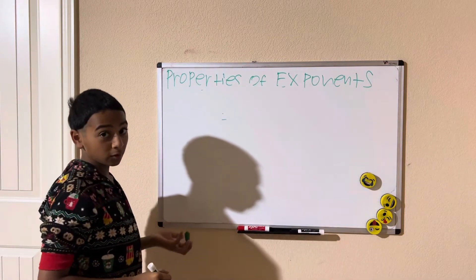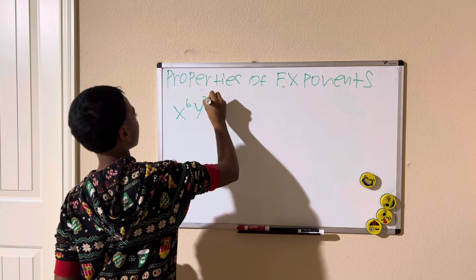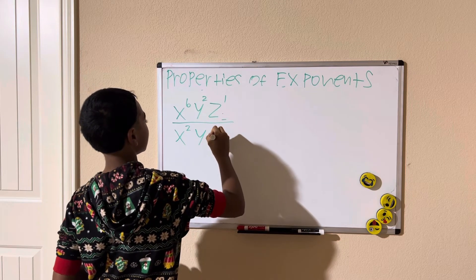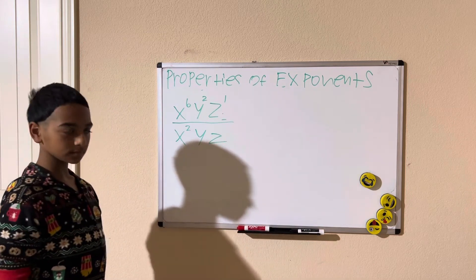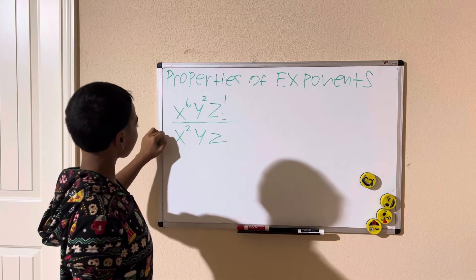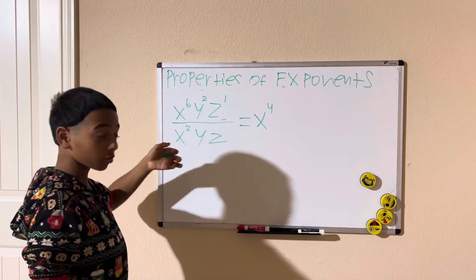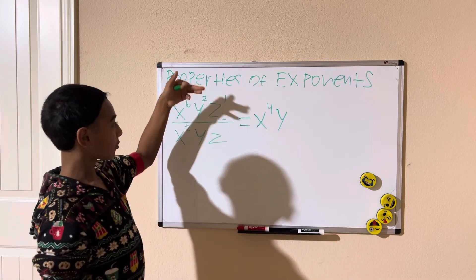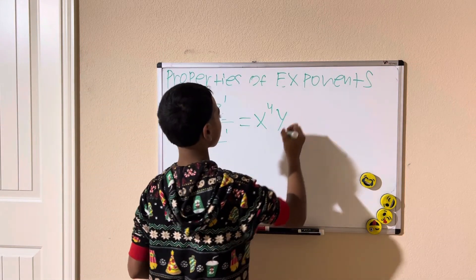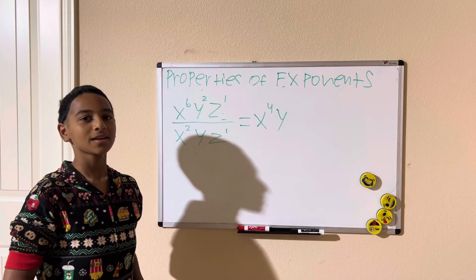One last problem with multiple variables: x to the sixth times y squared times z to the first, divided by x squared times y times z. For each variable we subtract exponents: x⁶ divided by x² is x to the fourth; y squared divided by y to the first is y; and z to the first divided by z to the first cancels to 1. Our final solution is x to the fourth y. That concludes our lesson on properties of exponents — thank you and bye!